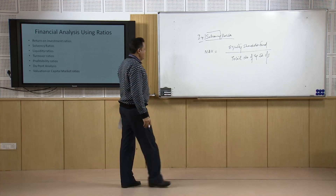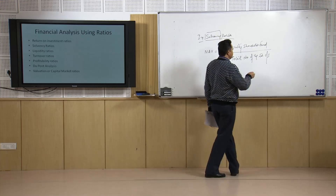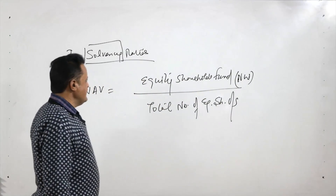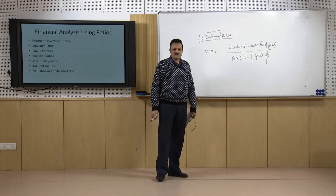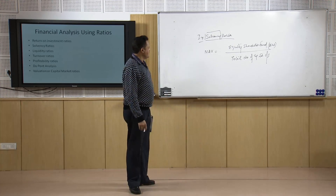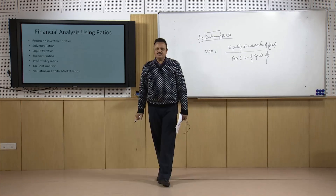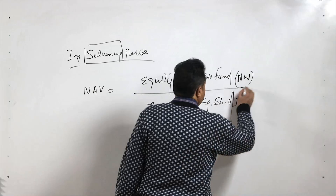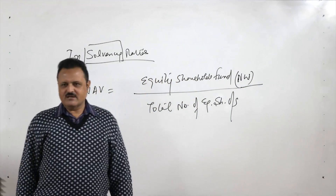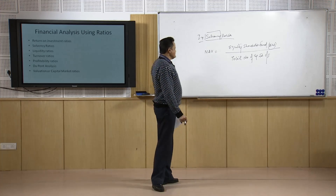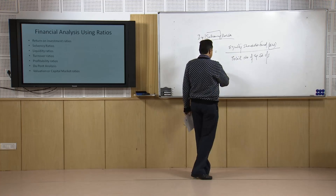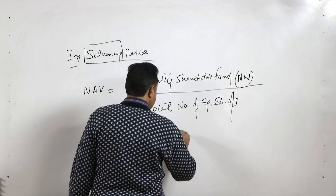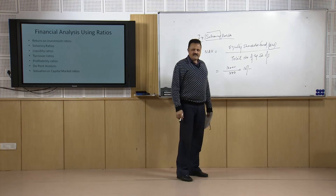NAV, or Net Asset Value, can also be called net worth. The formula is: net worth divided by total number of equity shares outstanding — meaning how much of the net worth is represented per share. For example, if net worth is 10,000 and total shares are 1,000, then net worth per share is 10 rupees.